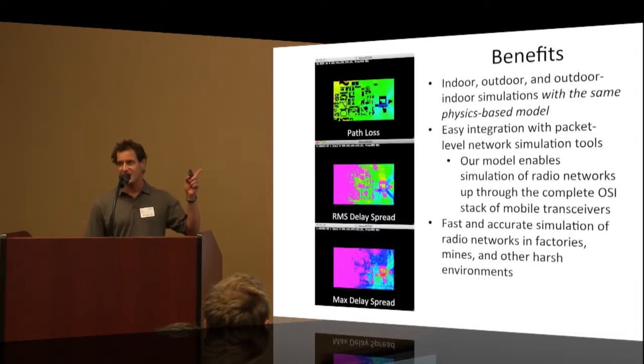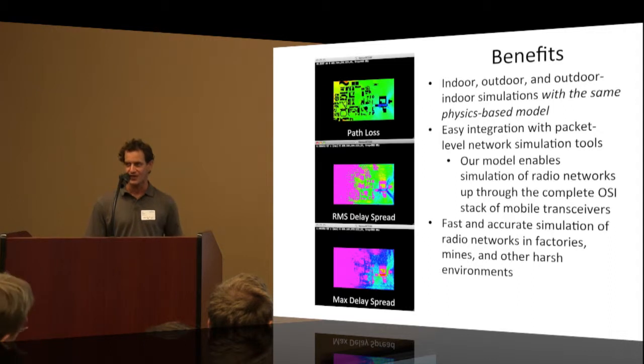So there's competing products. The competing products are based on geometric optics. The problem that you have with competing products is that the cost of doing the simulation grows twice on you. Once with the complexity of your 3D model - you put in too many walls, you put too many metal structures in there, you can't finish the simulation in a reasonable period of time. You got to go out to Oak Ridge and buy time on a supercomputer to figure out how your wireless network is going to work.